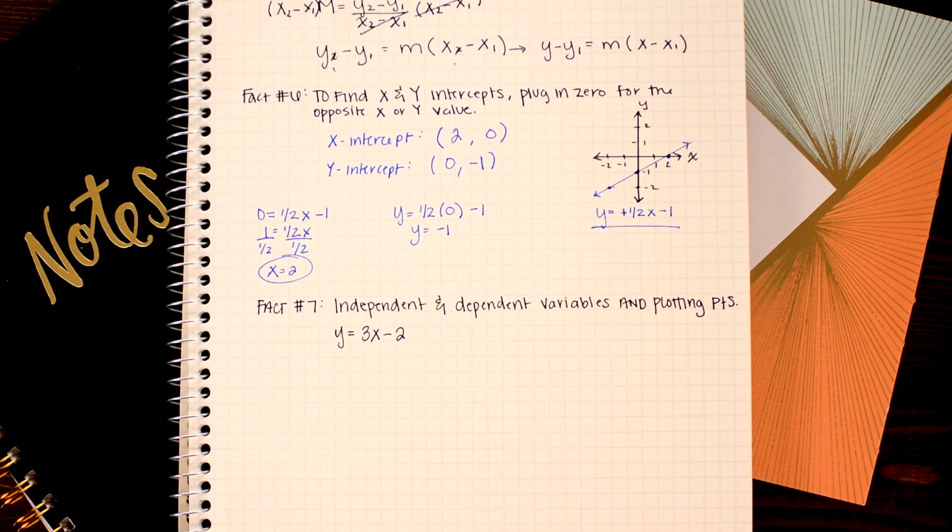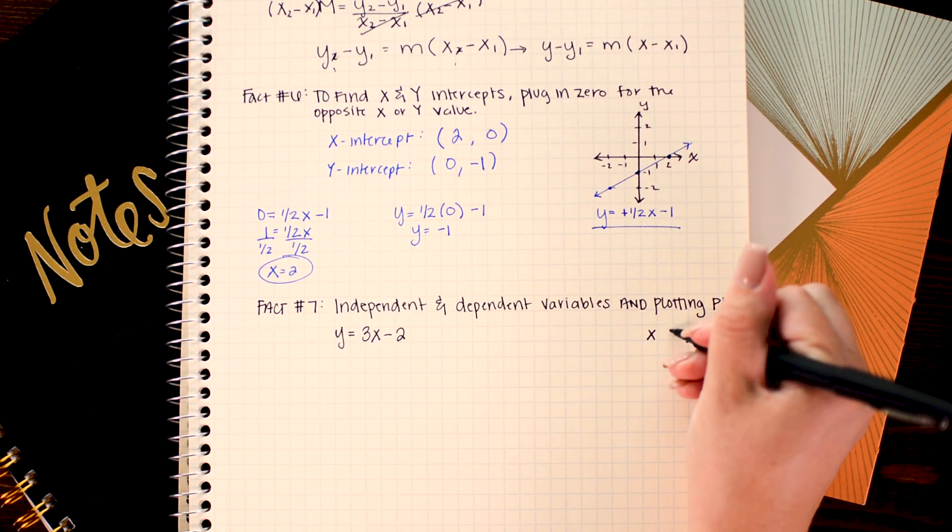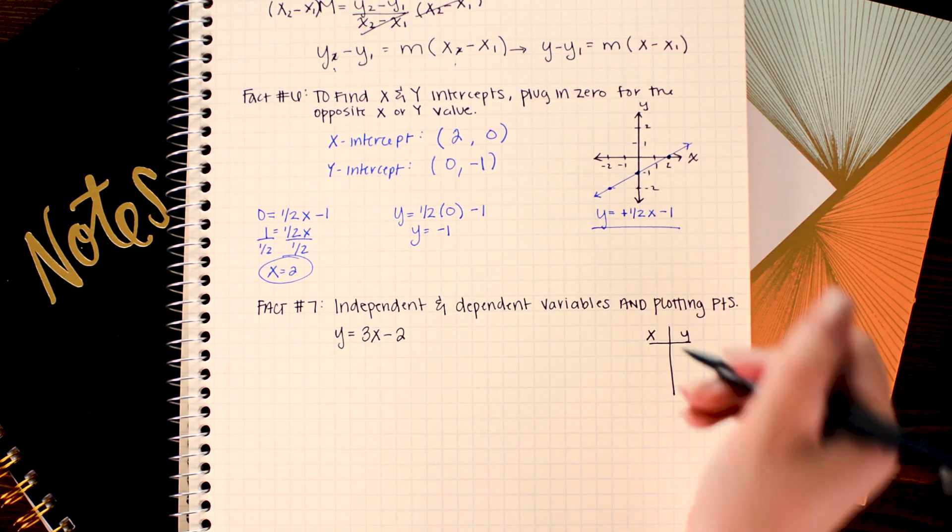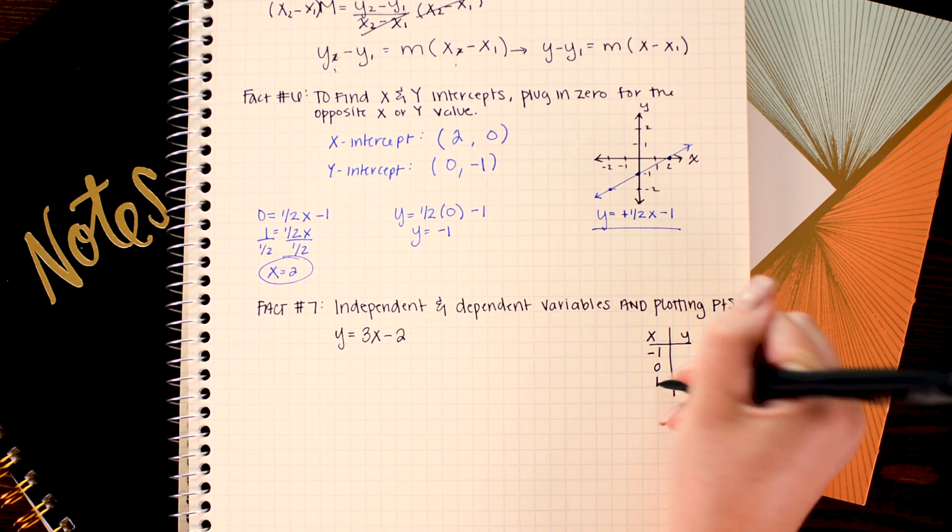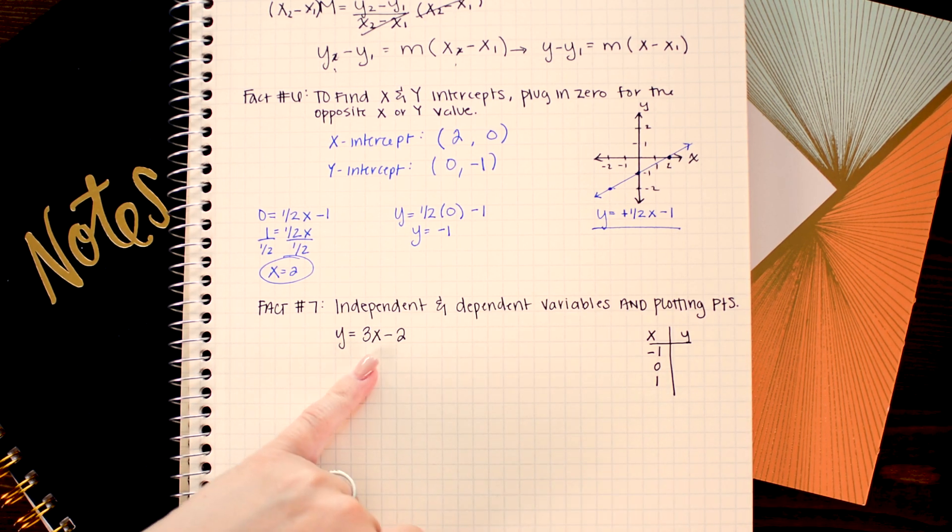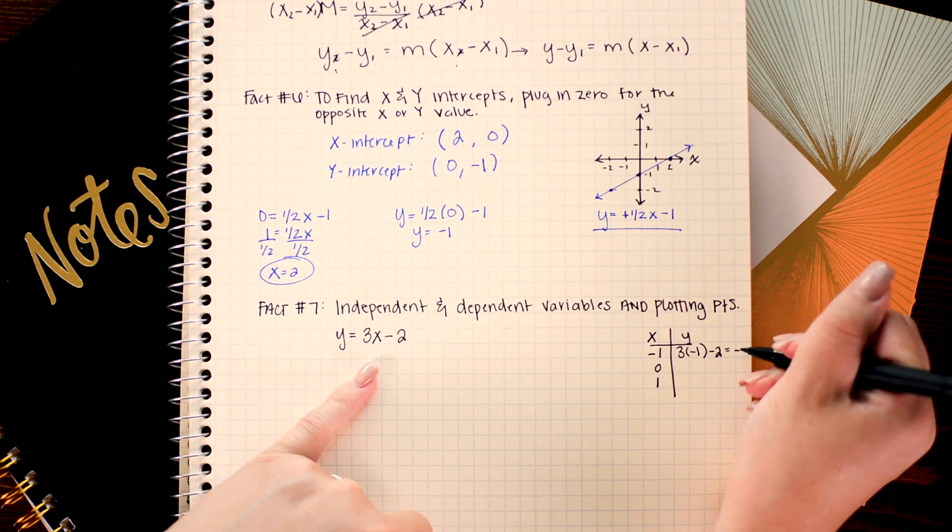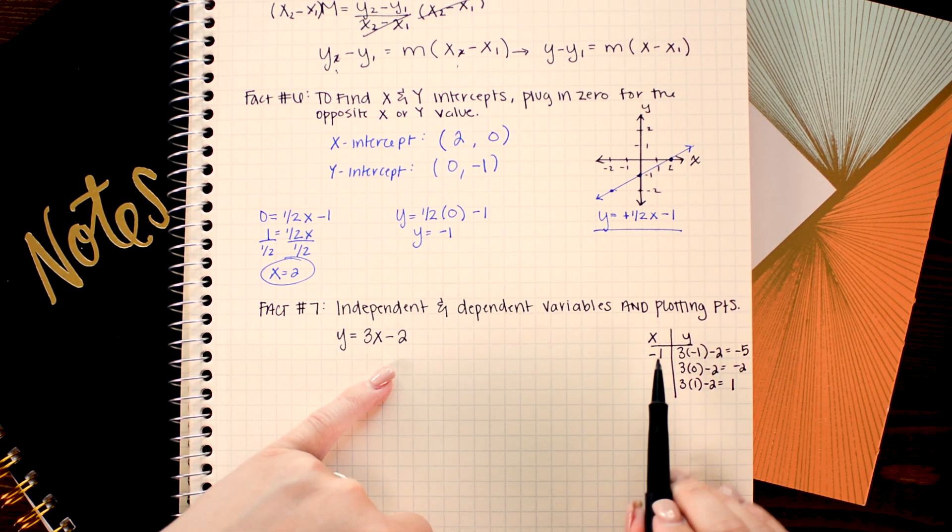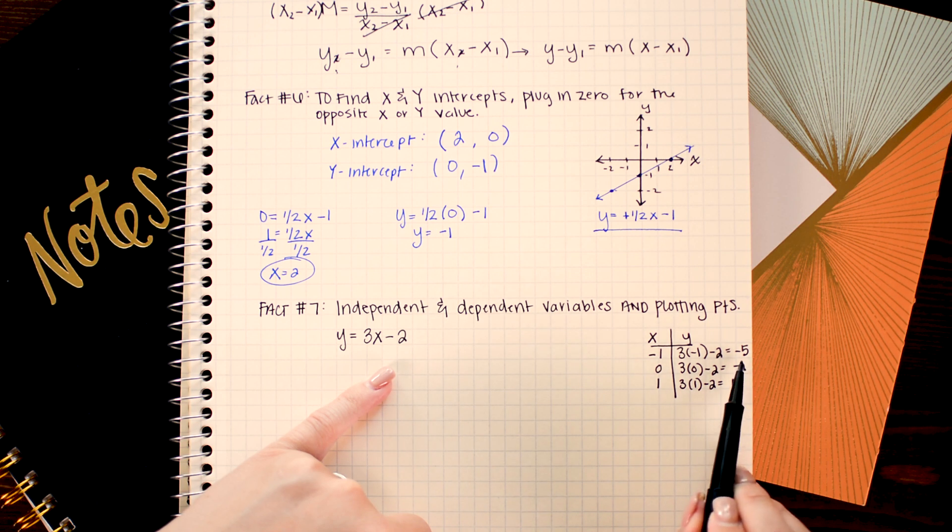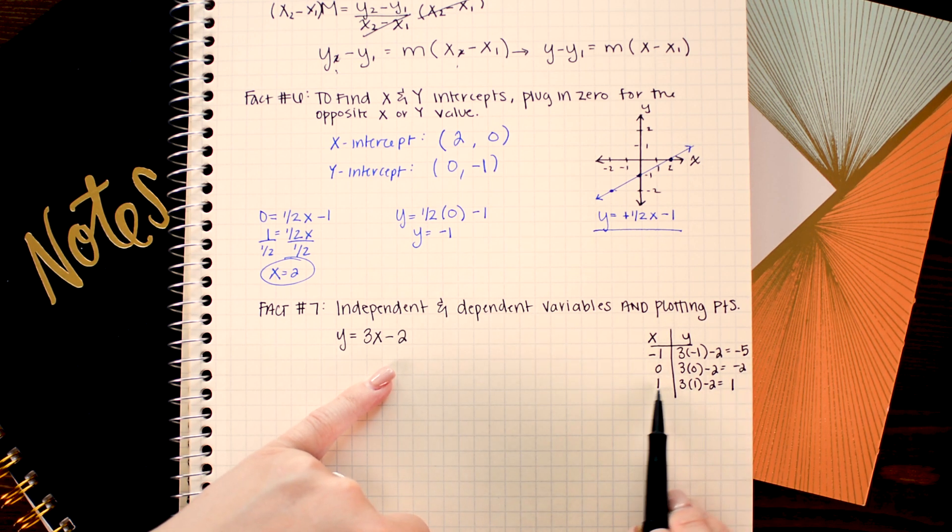Plotting points will not only help you when you're stuck but it can also help guide you to which variable is the independent and which is the dependent variable. Of course if you're ever stuck you can always plot points. To do this you make a little x and y table. Choose some values for x. I'm going to choose negative one, zero, and one. And then plug those values into your equation to figure out what the output or y value will be. When I do that I get the coordinates negative one, negative five; zero, negative two; and one, one.